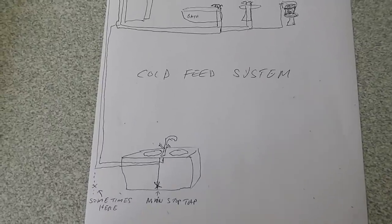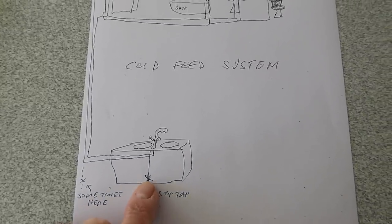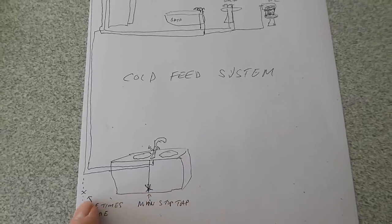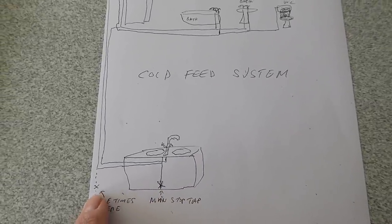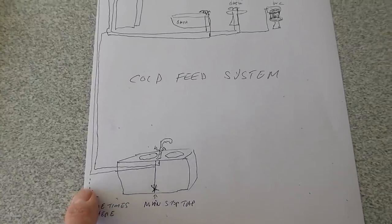This one I call a cold feed system. Again, there's our kitchen sink and the stop cock is usually behind there. It may be in a corner near the sink and it can also be behind a little duct panel sometimes, a little round cut out.